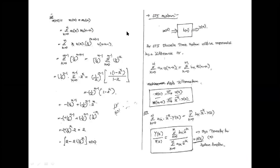You already discussed about the inverse Z-transformation using four methods. The first method is the power series method or long division method. The second method is partial fraction expansion method. The third method is the residue contour integration method. The last one is finding the time domain function X(n) using the convolution property.